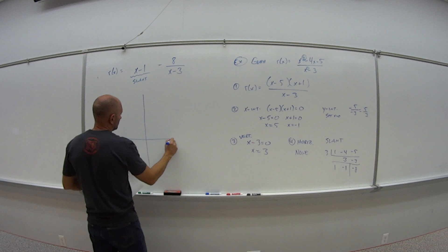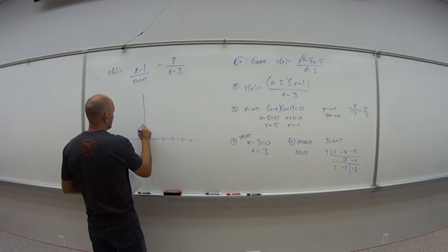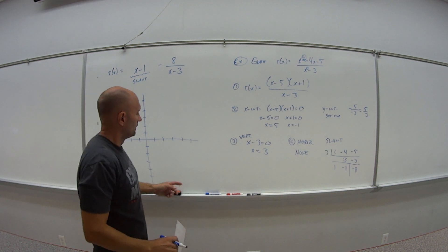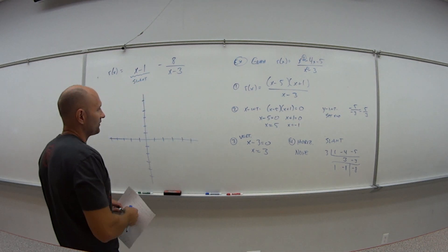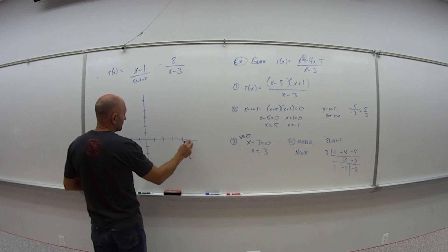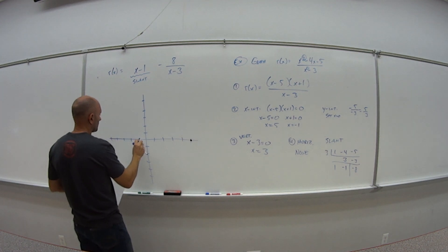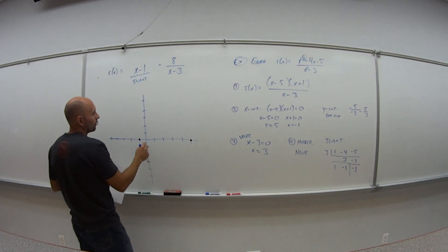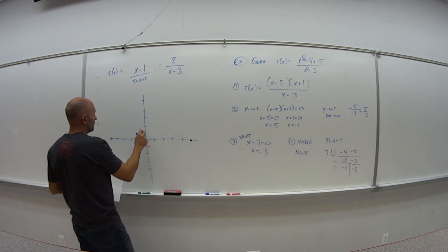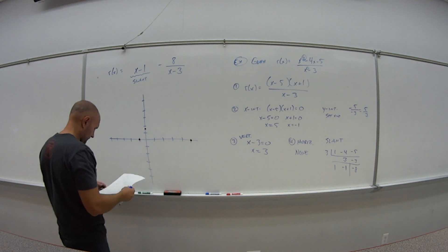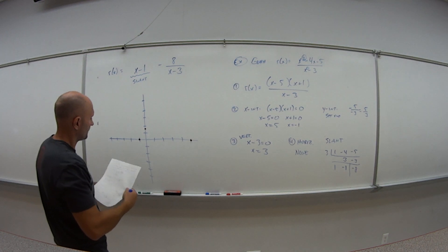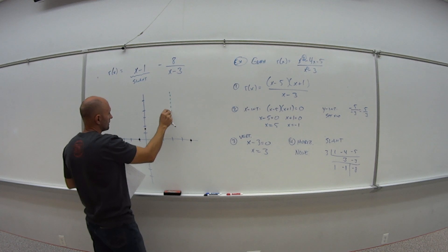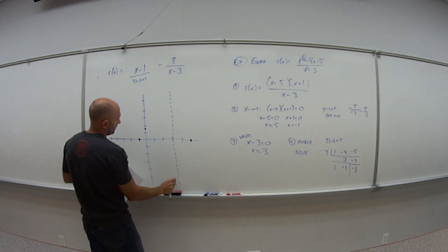So if I'm now going to sketch this. So my x intercepts are at 5 and at negative 1. My y intercept is at positive 5 thirds. So that's what? That's about 2 and, what, 2 and 2 thirds. So there. Now my asymptotes. So my vertical asymptote is that x is equal to positive 3.